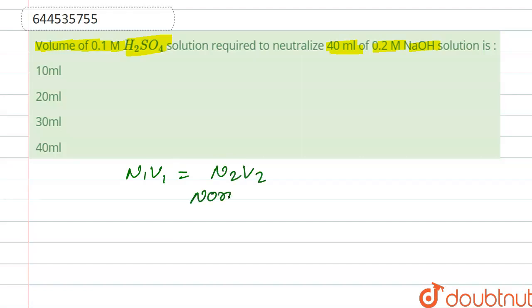Here N is normality, which is calculated as molarity into n-factor.